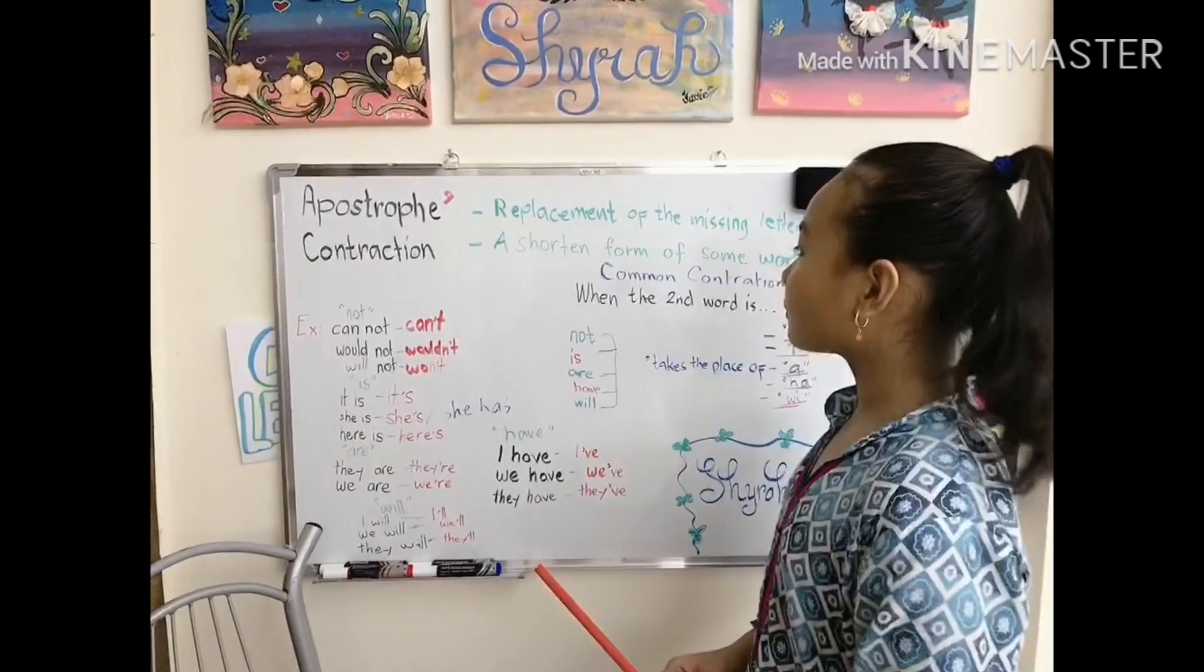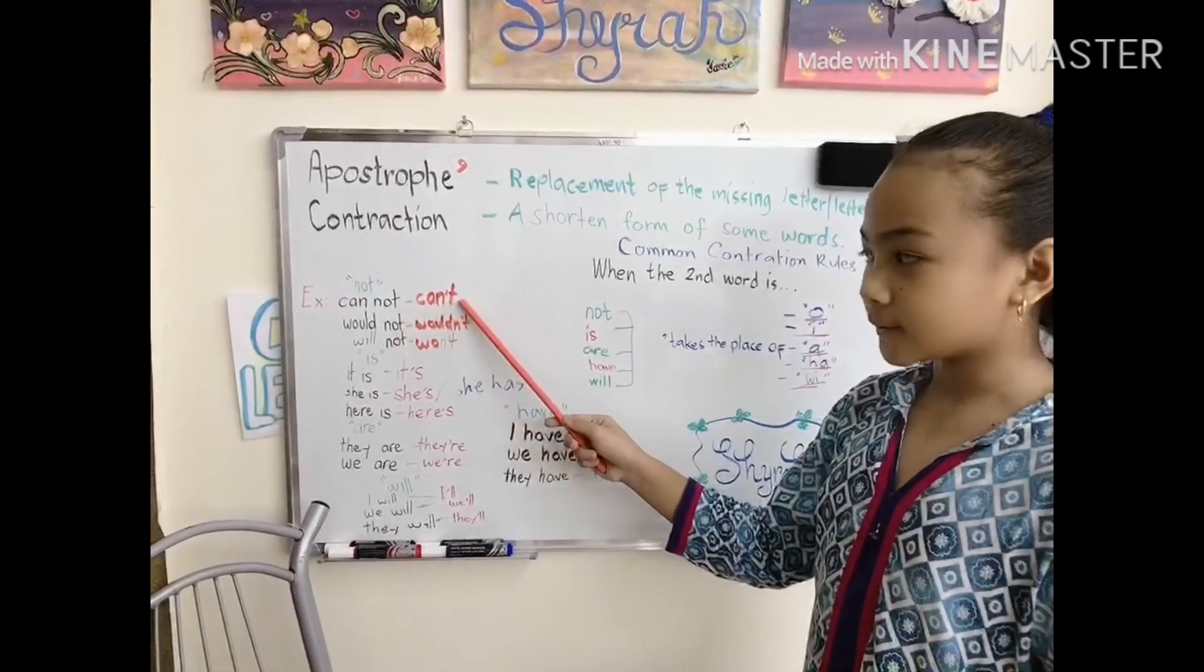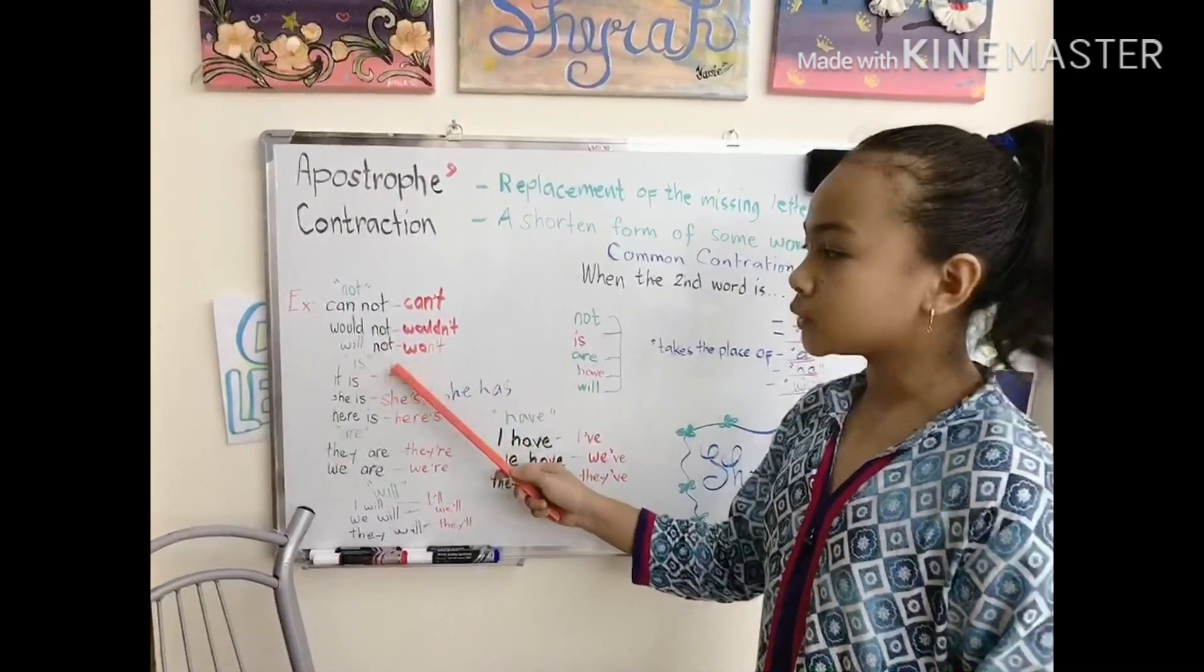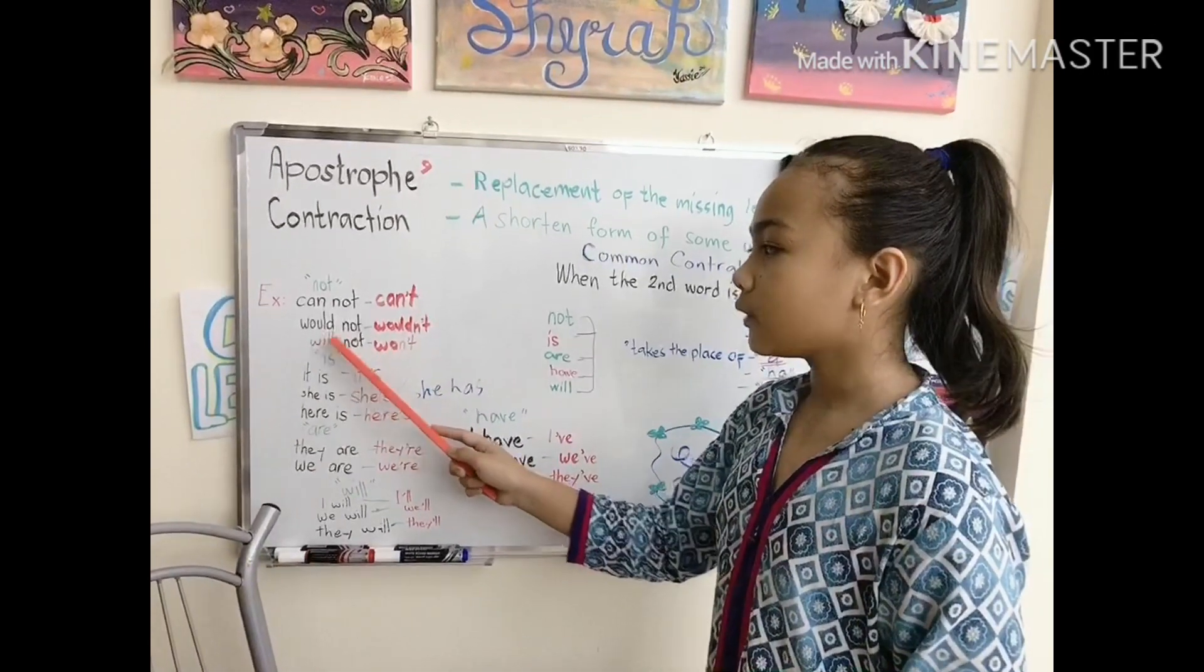Here are some examples for the second word not. Cannot becomes can't. Would not becomes wouldn't. Will not becomes won't. But be careful here, you have to replace the i with o.